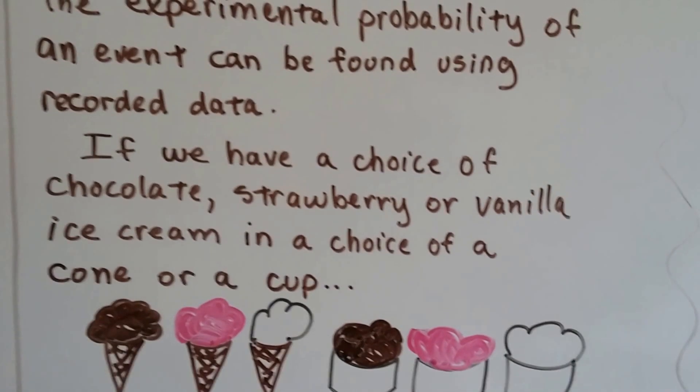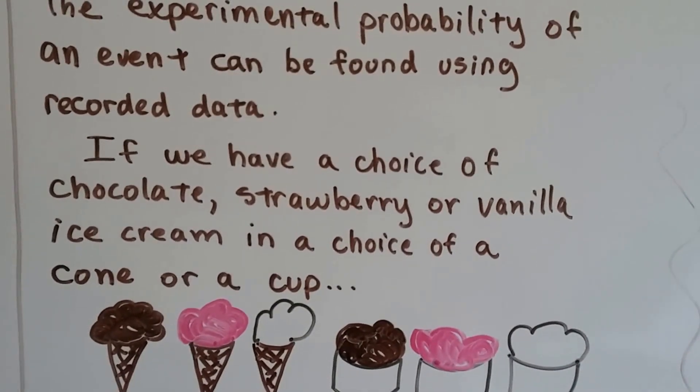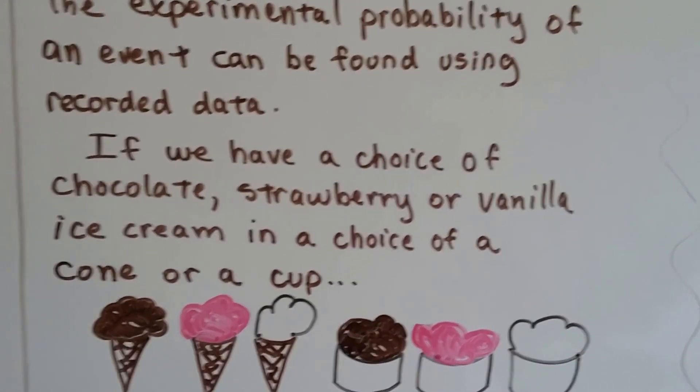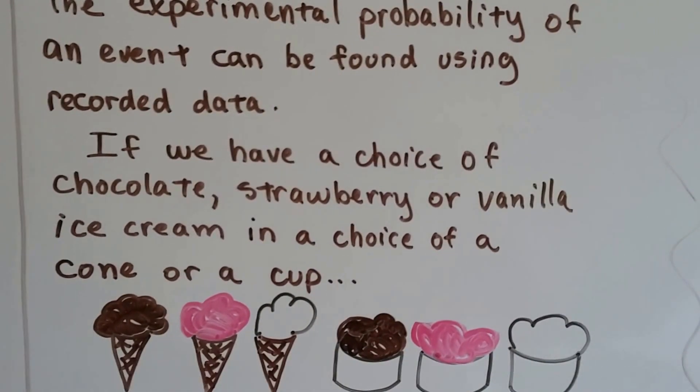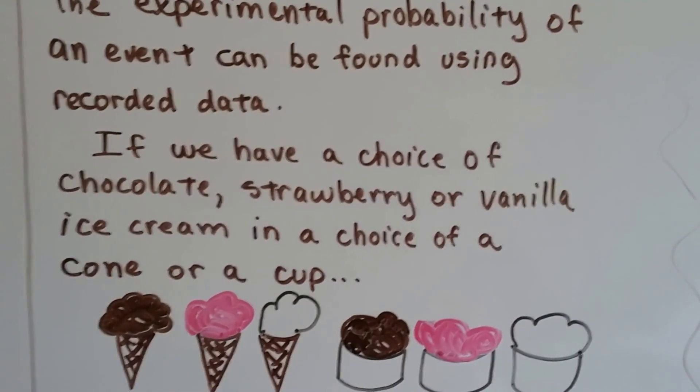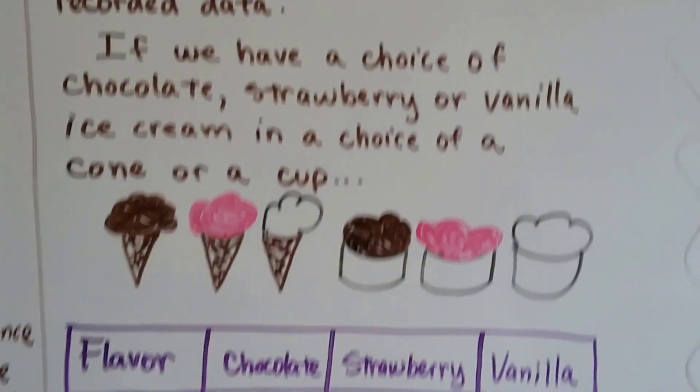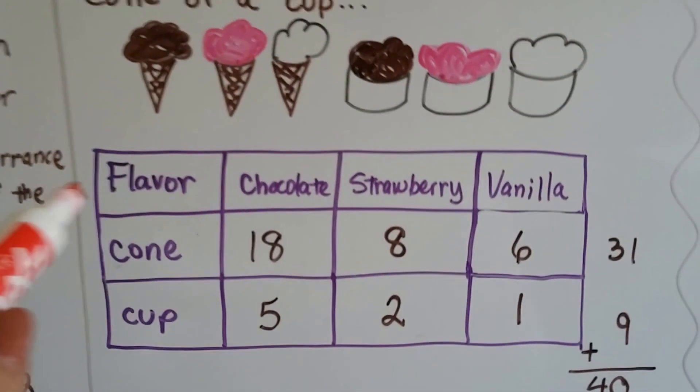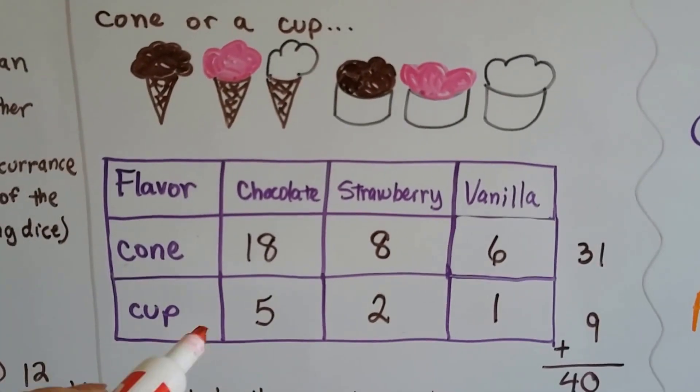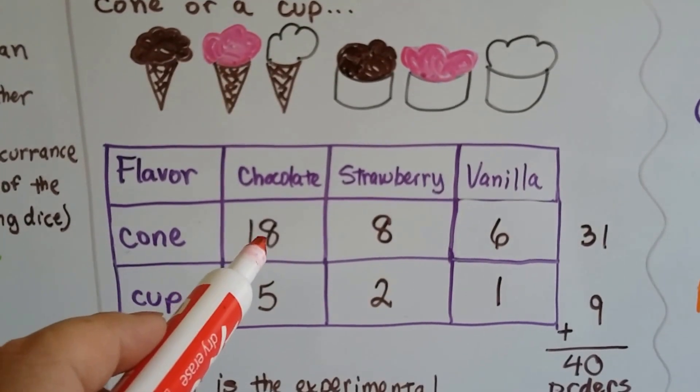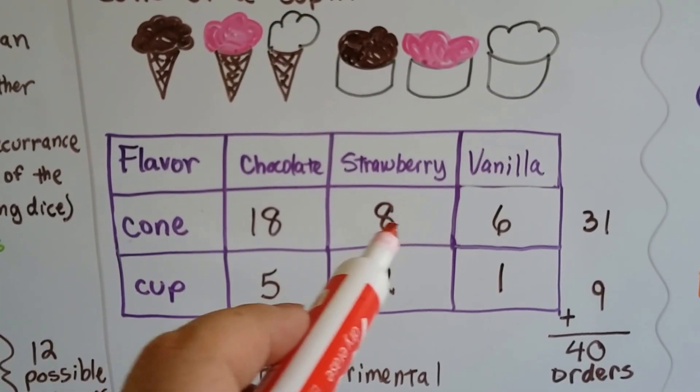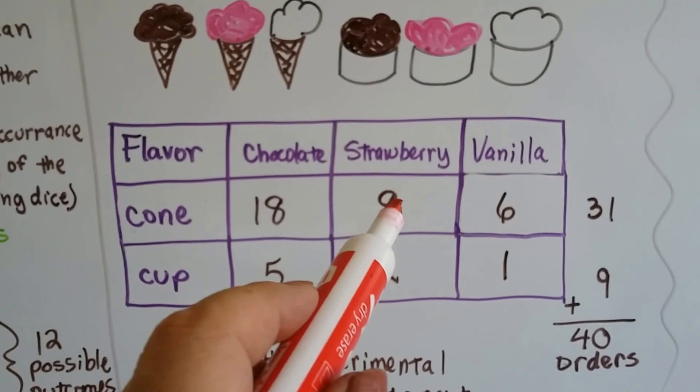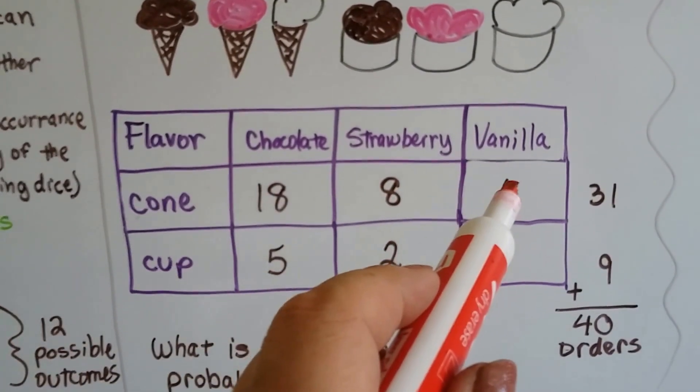The experimental probability of an event can be found using recorded data. If we have a choice of chocolate, strawberry, or vanilla ice cream in a choice of a cup or a cone, we could log what the customers ordered. If 18 people ordered chocolate ice cream in a cone, 8 ordered strawberry in a cone, and 6 ordered vanilla in a cone,